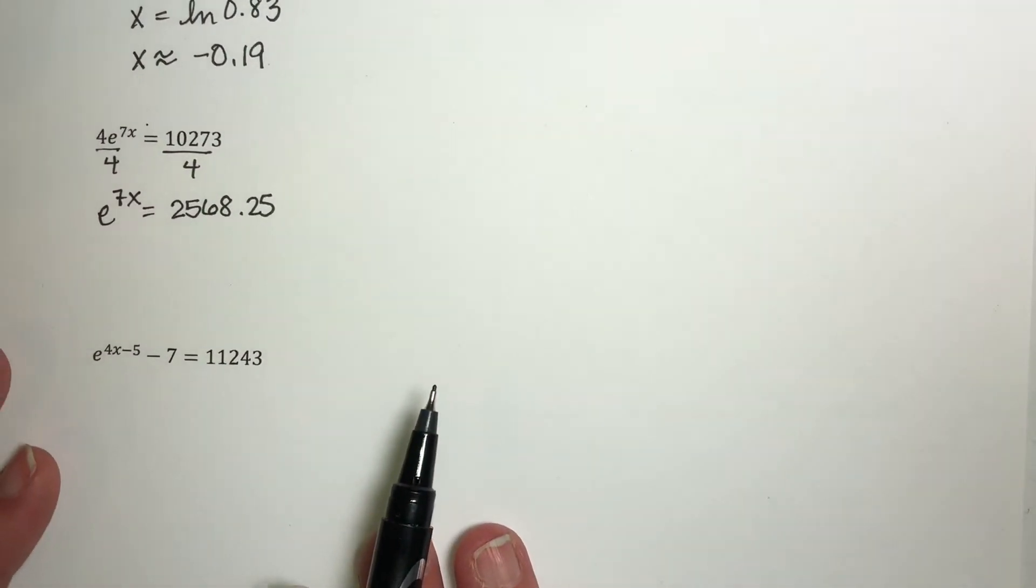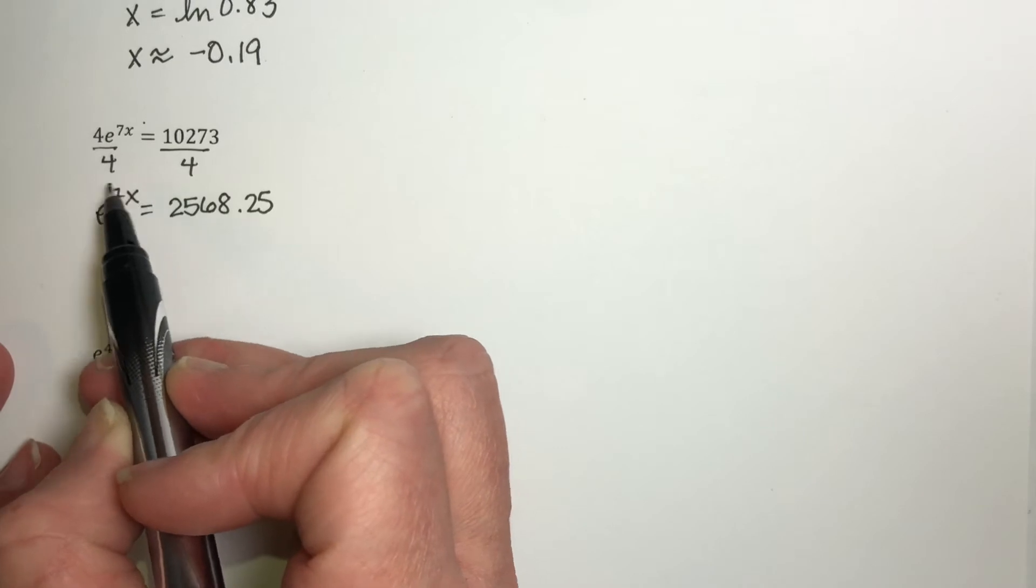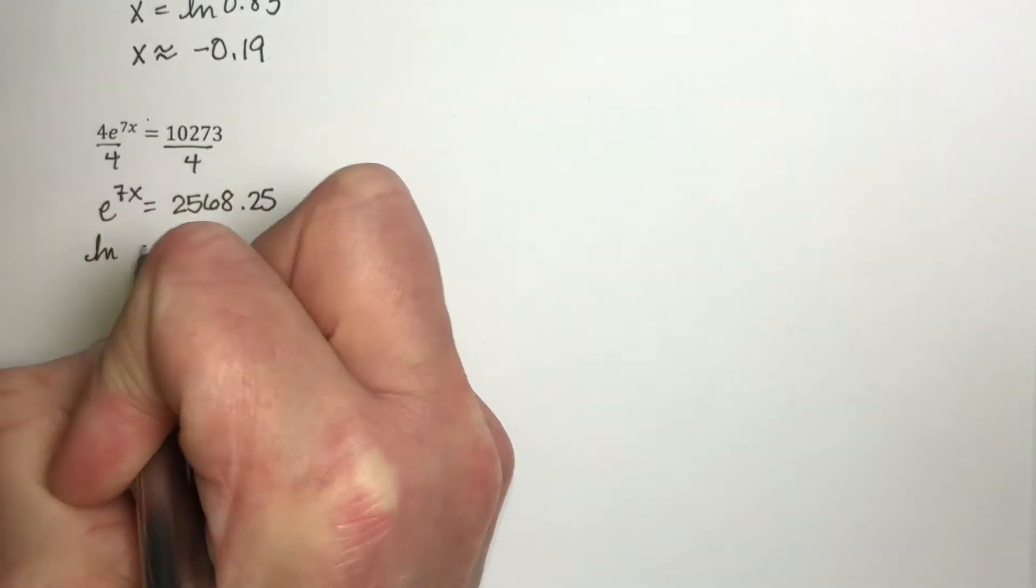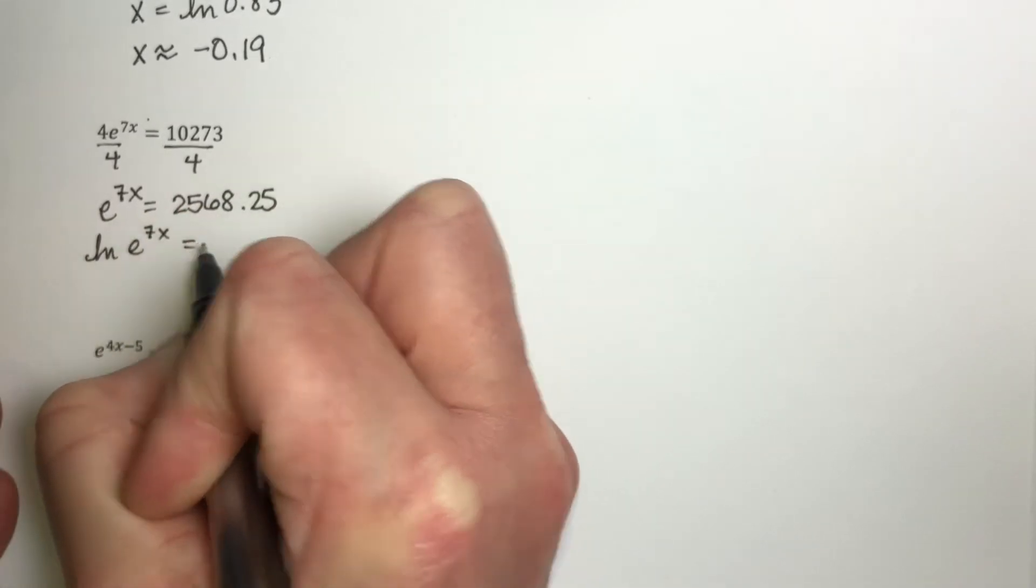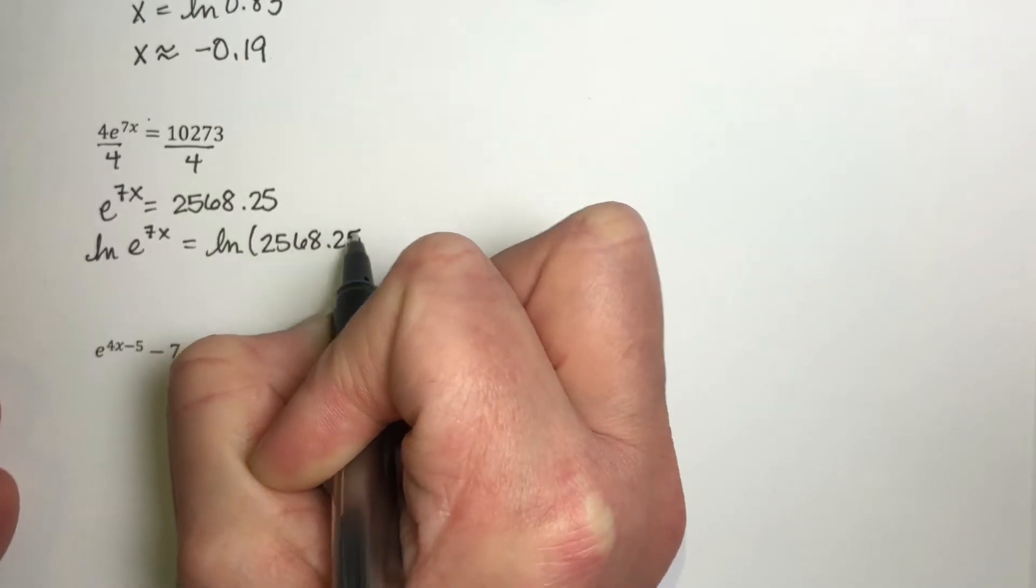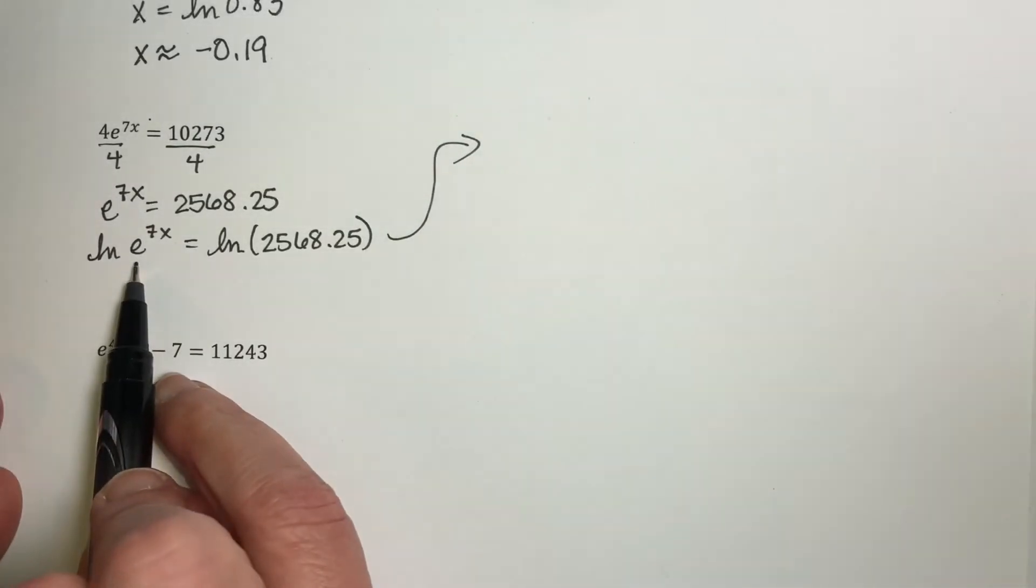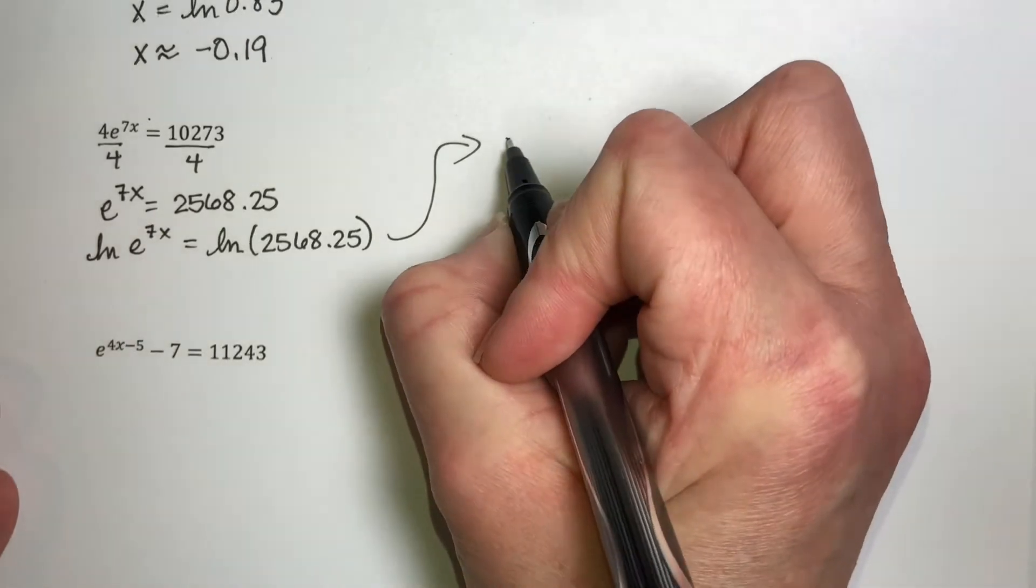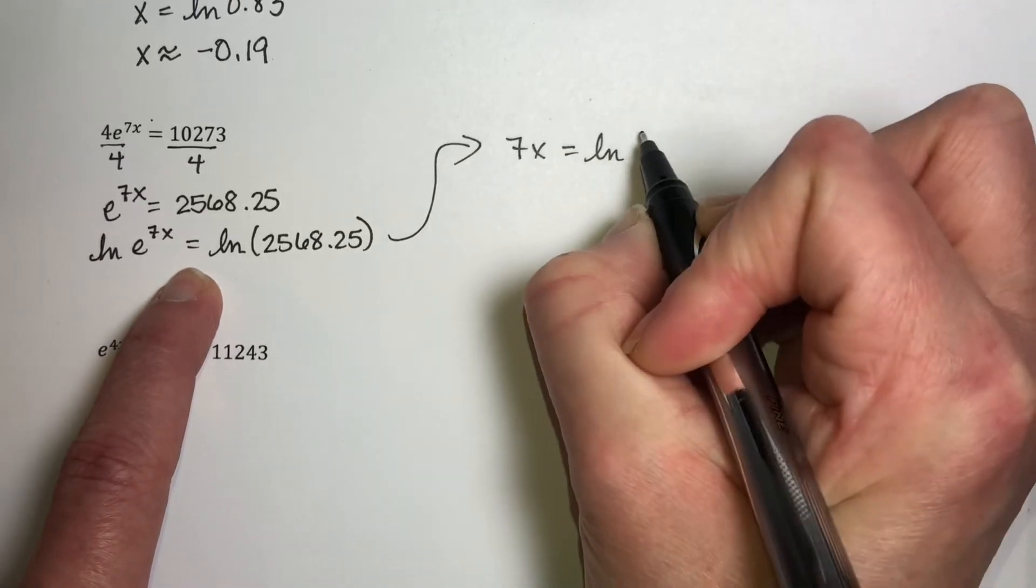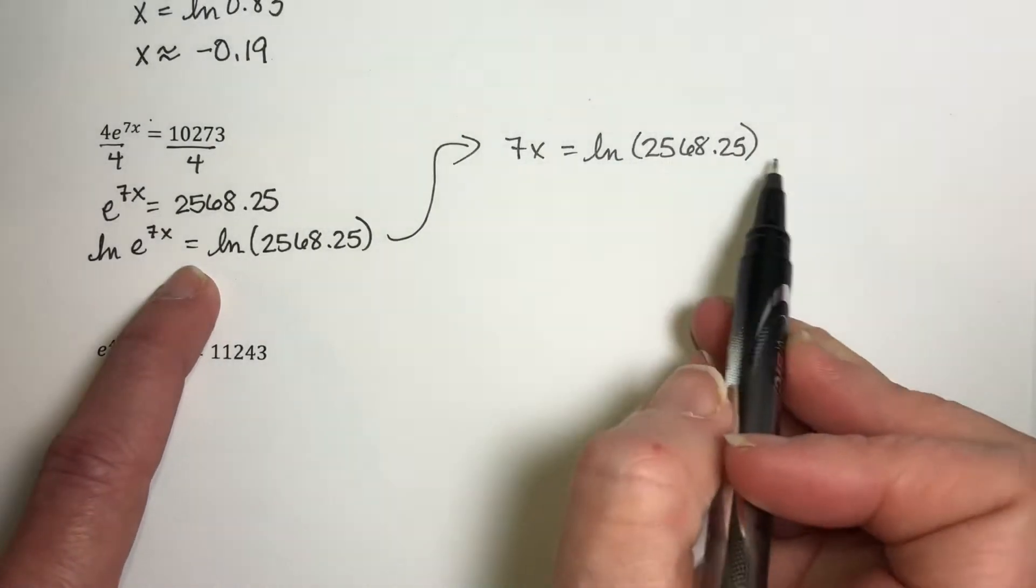Now what I want to do is I want to get rid of this e. I want to get the 7x out of the exponent right here, and I do that by taking natural log of both sides. So if I take natural log of e^(7x), that's going to equal natural log of 2568.25. The natural log and the e undo each other, so I have 7x equals natural log of 2568.25.